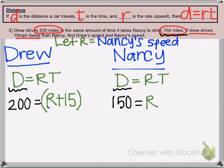Okay, so Drew is the speed of Nancy plus 15. And it says, find Drew's speed and Nancy's speed. So if you look, both equations have a T here. They match up.